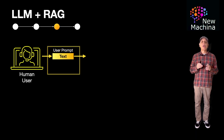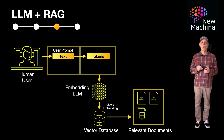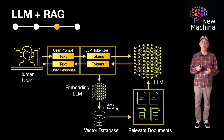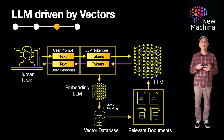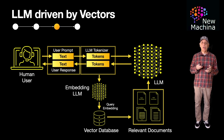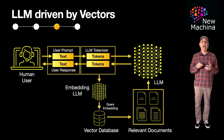Lastly, I'll quickly show you the flow for an LLM-driven system that includes proprietary data stored in a vector database. First, the user sends a user prompt to an LLM. Next, the LLM tokenizer converts the text in the user prompt into tokens. The user prompt is also submitted to an embedding LLM, which generates a query embedding and uses this to perform a similarity search on the vector database. Semantically relevant documents are then paired back up with the original user prompt and the LLM uses both of these to generate a response. The response embedding is converted to output tokens and from there the output tokens are converted back to a user response.